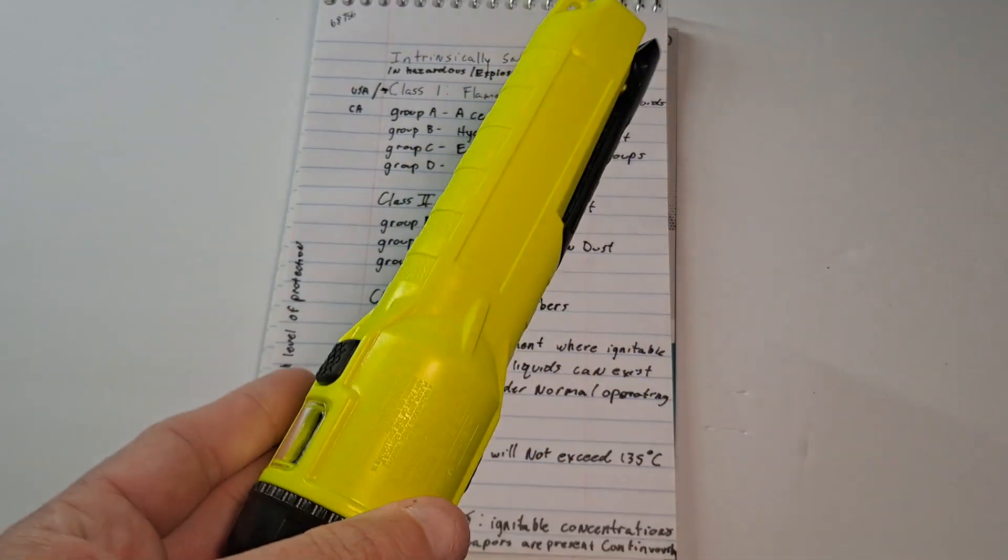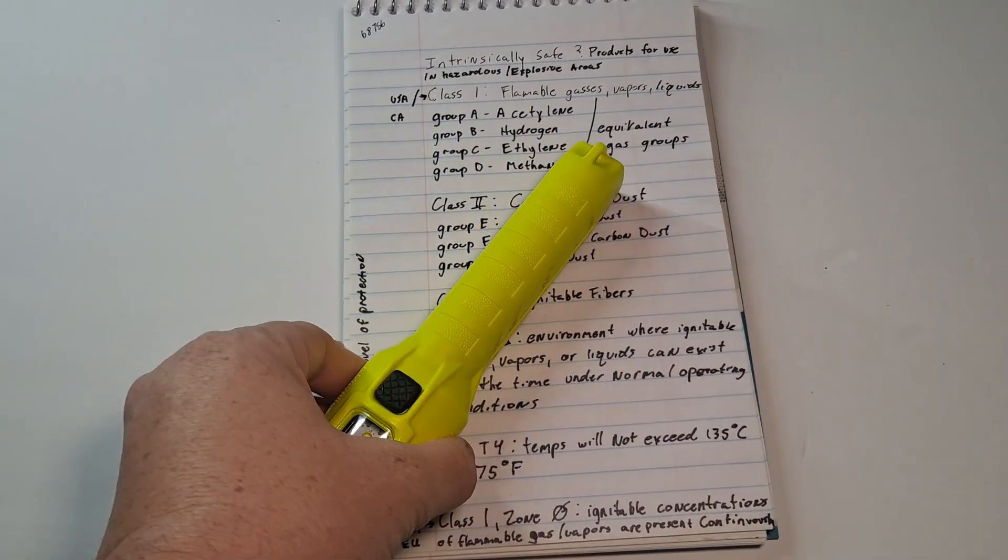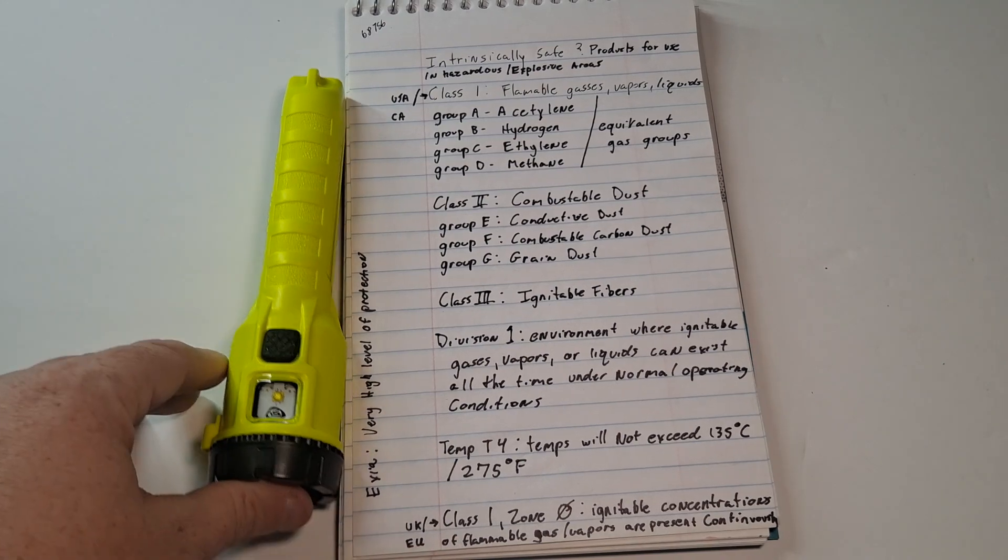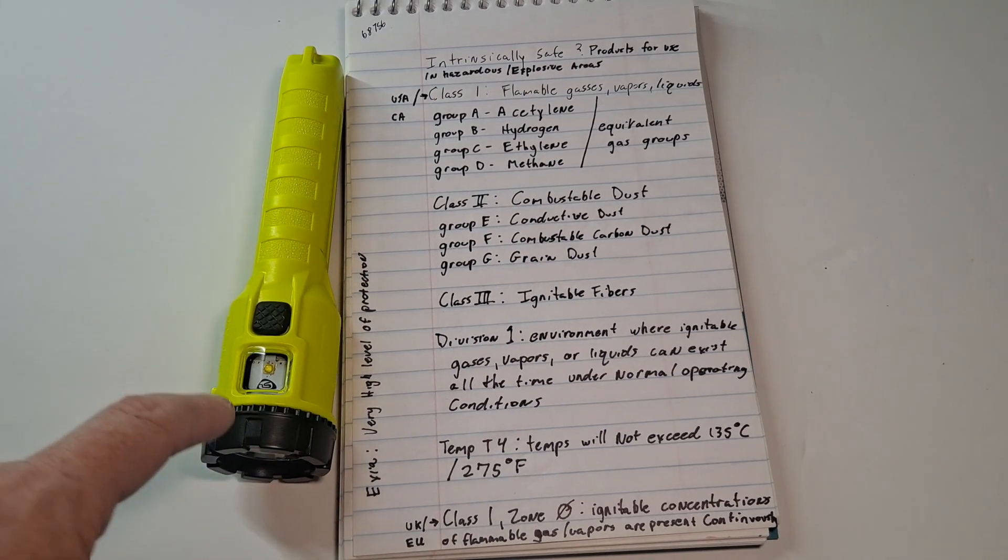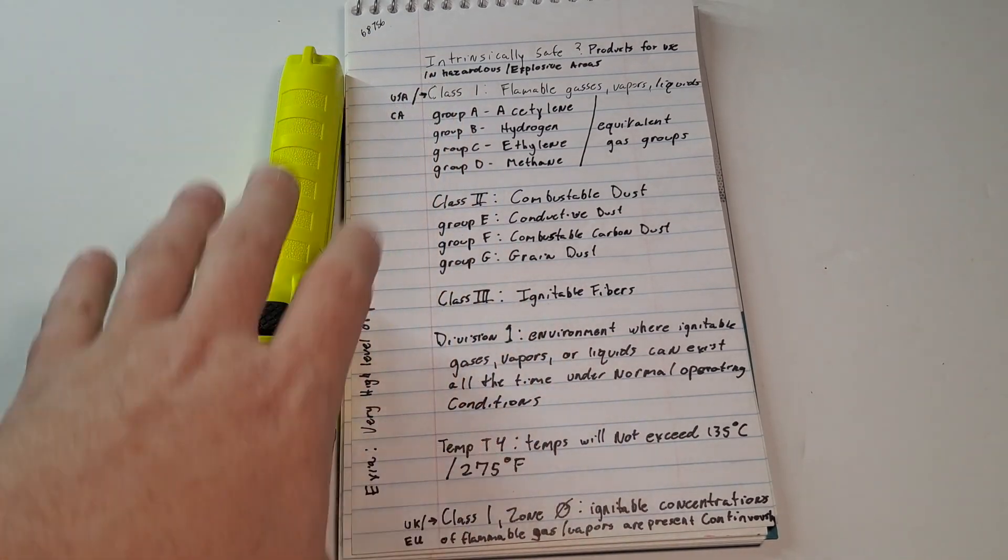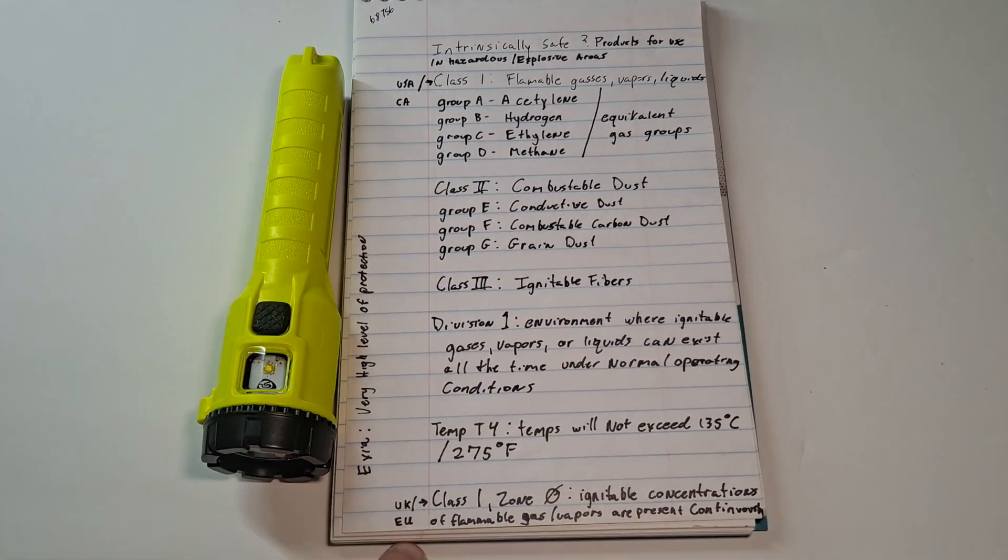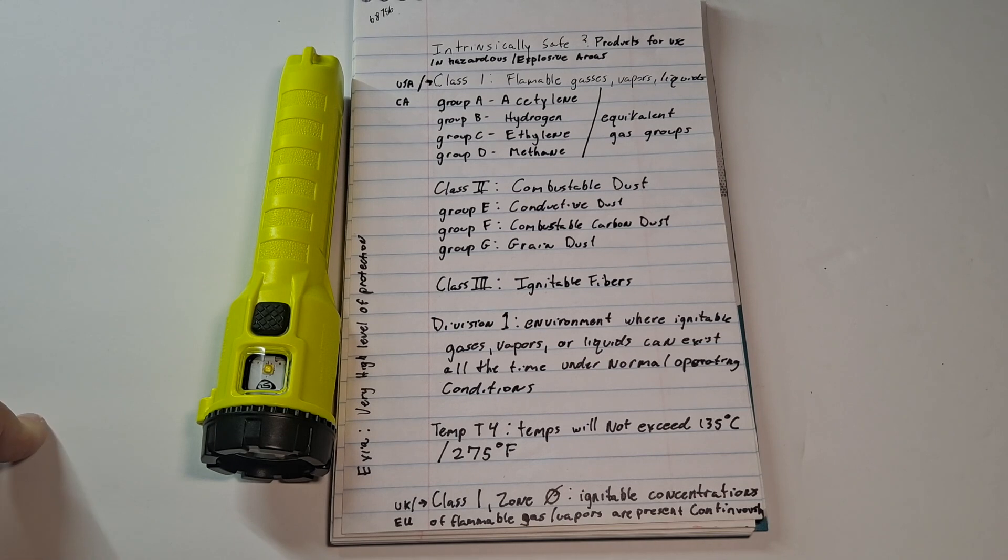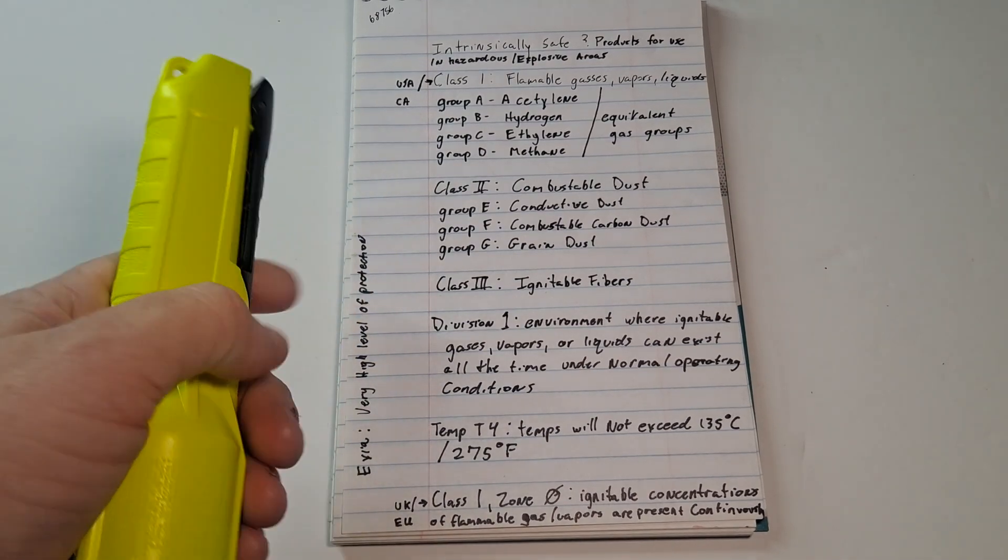So this is an explosion proof hazardous use flashlight. These are the reasons why it's rated the way it is. These are actually all the ratings. UL does ratings like this. There's a whole bunch of companies that do CE, EX, M, S, H, A, ANSI, SGS, UL. There's a whole bunch of special certifications.